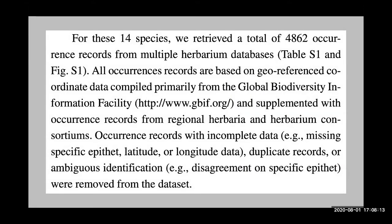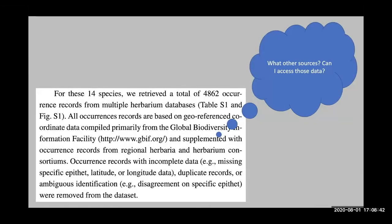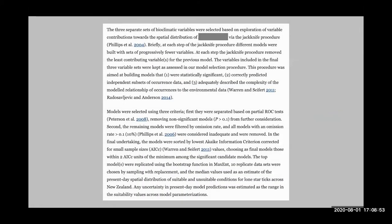Here's another one: 'For these 14 species we retrieved a total of 4,862 occurrence records from multiple herbarium databases; all occurrence records were based on georeferenced coordinate data compiled from GBIF, supplemented with occurrence data from regional herbaria and herbarium consortia.' What are these other sources? Can I access the data, or could I replicate the dataset?